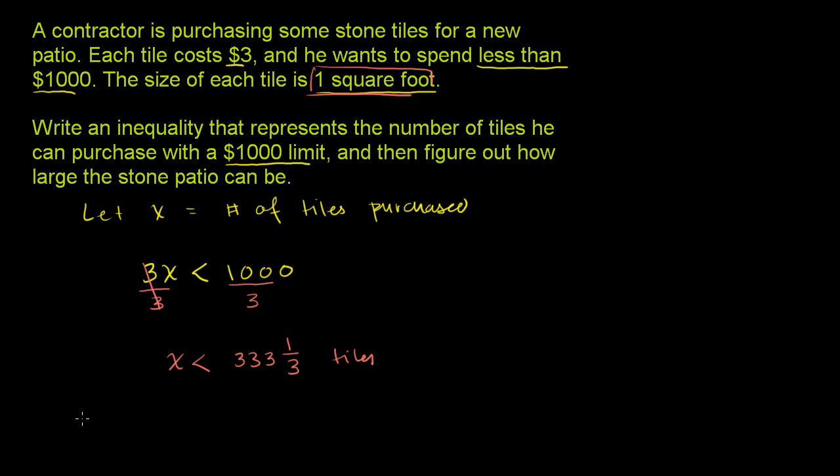So if he can buy less than 333 and 1/3 tiles, then the size of the patio also has to be less than 333 and 1/3 square feet. And we're done.